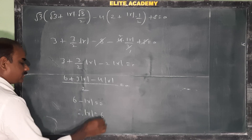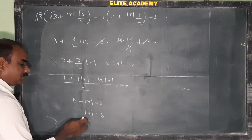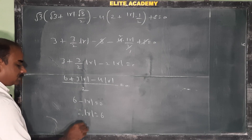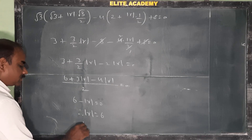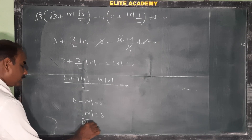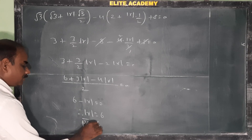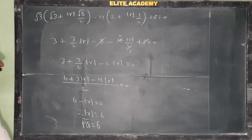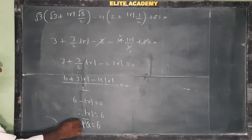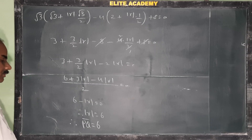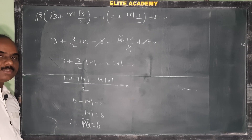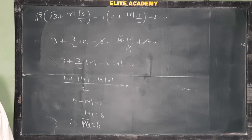So |r| = 6, and |r| is nothing but the distance between P and Q. Therefore, PQ = 6.